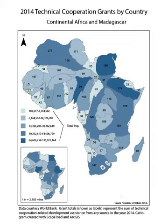is financial aid given by governments and other agencies to support the economic, environmental, social, and political development of developing countries. It can be further defined as aid expended in a manner anticipated to promote development, whether achieved through economic growth or other means. It is distinguished from humanitarian aid by focusing on alleviating poverty in the long term, rather than a short-term response.